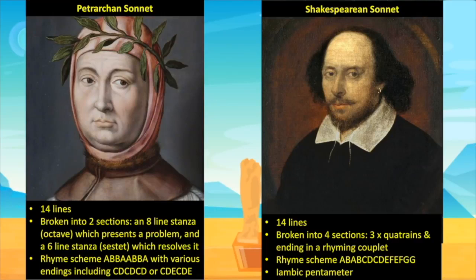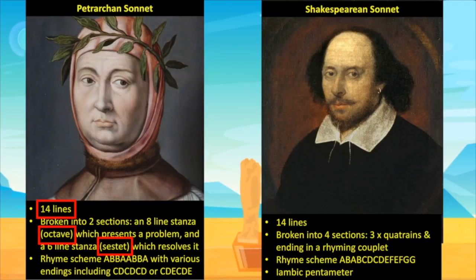Many see elements of the Petrarchan sonnet in Ozymandias: there are 14 lines structured as a group of eight lines — the octave — which presents details about the broken statue, and a group of six lines — the sestet — which focuses on the pedestal and its now ironic message of complete power. However, the opening rhyme scheme, ABAB, fits the Shakespearean sonnet model, not the Petrarchan model.